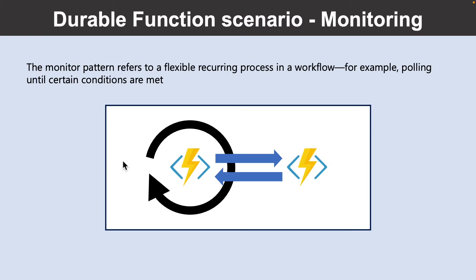The next scenario is Monitoring. The Monitor Pattern refers to a flexible recurring process in a workflow — for example, polling until certain conditions are met. A regular timer trigger can address a simple scenario such as a periodic cleanup job, but its interval is static and managing instance lifetimes becomes complex. Durable Functions enable flexible recurrence intervals, task lifetime management, and the ability to create multiple monitor processes from a single orchestration.